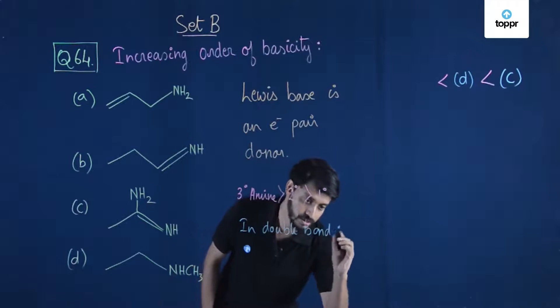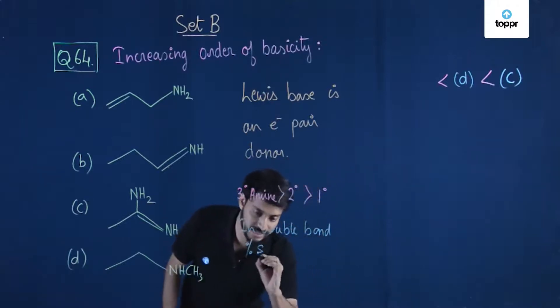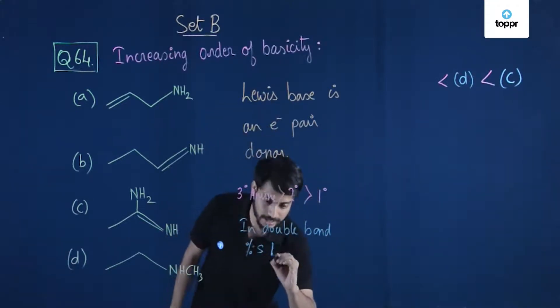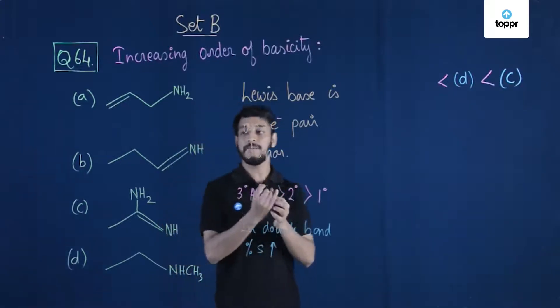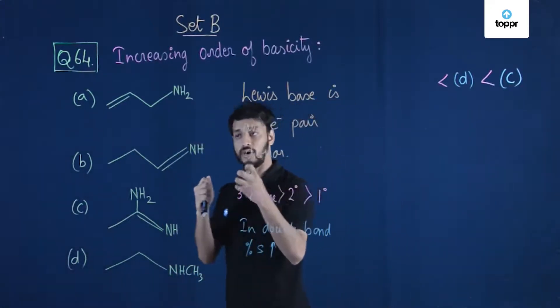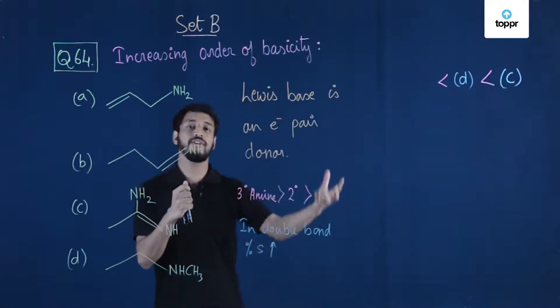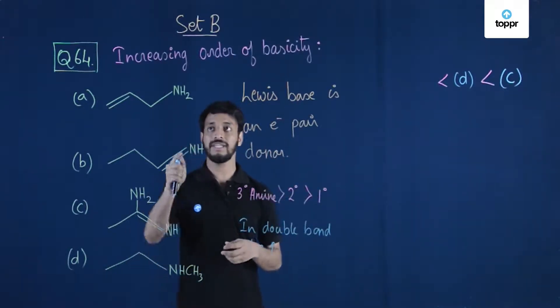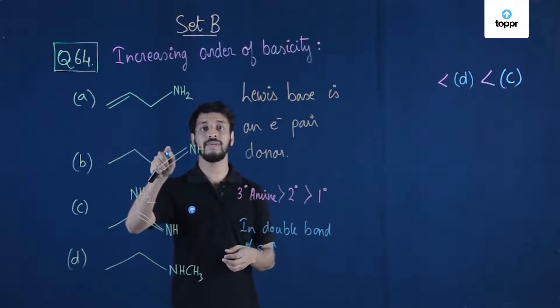In double bond, percentage S is quite high. Okay? That means the electron pairs, the free electron pairs, they're quite highly bonded and they are not easily available for donation. That means among these two this should be the least.